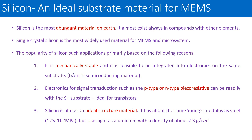From raw silicon, single crystal silicon is made using the Czochralski method — we will see that in the next video. Single crystal silicon is most commonly used for making MEMS systems and micro systems. Silicon is very popular in many applications for the following reasons.